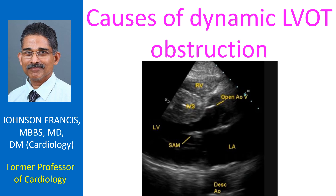Hypertrophic cardiomyopathy is the most important cause of dynamic left ventricular outflow tract obstruction. In transposition of great arteries with intact interventricular septum, LVOT obstruction due to systolic anterior motion of the mitral valve is also possible.